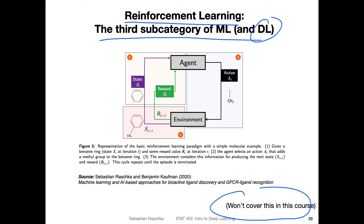Reinforcement learning is about learning a series of actions. In this case, this is a drug design problem where we want to design a small molecule. We have a current state — in this case, a benzene ring — and the agent sees this current state and then has to take an action on it. The action would be to add a small chemical group, a methyl group, to the benzene ring.